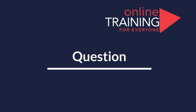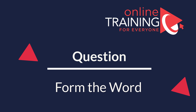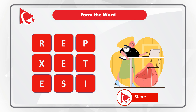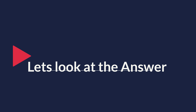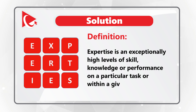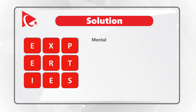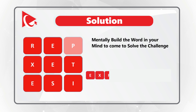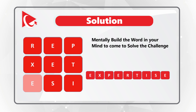Very frequently you might get tested on how quickly you can form words using letters of the English alphabet. You're presented with nine letters and need to form a word using all letters only once. The letters are R, E, P, X, E, T, E, S, I. The answer is the word EXPERTISE, which means an exceptionally high level of skill, knowledge, or performance in a particular task or domain. If you start in the middle — E, X, P, E, R, T, I, S, E — you can definitely form the word.